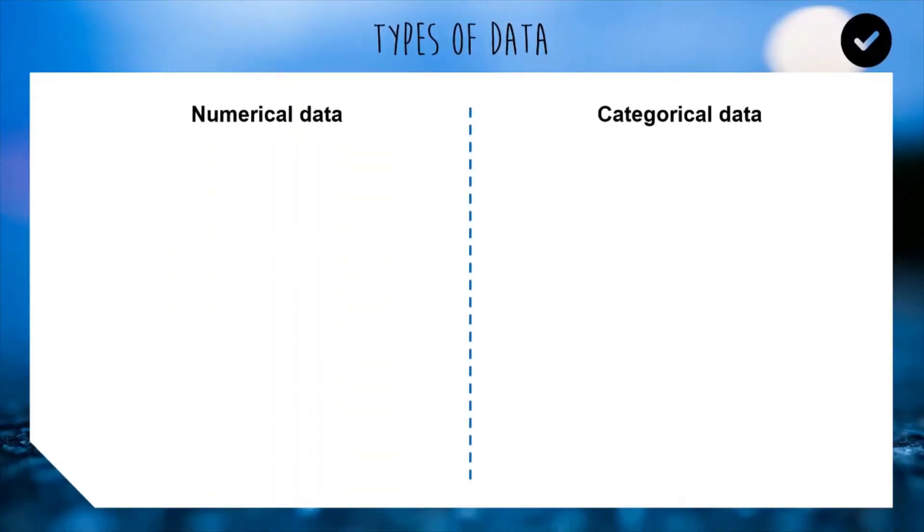Starting off looking at some vocab that we use in this course to classify types of data. First of all the two big main ones are data is typically either numerical or categorical. It's either numbers or it's categories.